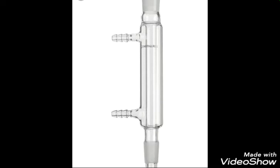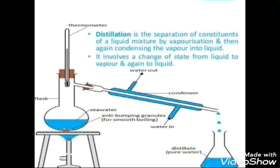Let's see the setup. There is a flask, a thermometer to check the temperature, and a condenser. The condenser collects the vapor and converts it into liquid. There is also a distillate collector to collect the pure water.